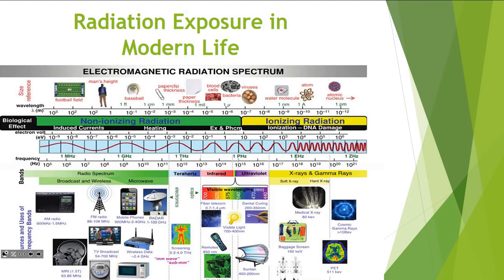To give you an idea of how big these waves are — for instance, an MRI wave is about the size of a football field. It's a very long wave, not very energetic. But if we get up to where X-rays are, it's the size of an atom.